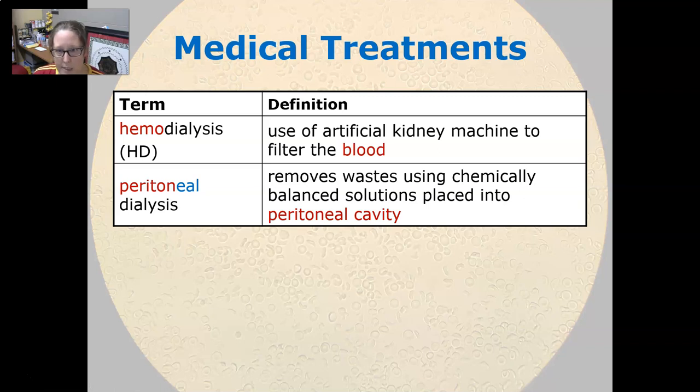Hemodialysis is the use of an artificial kidney machine to filter the blood. The blood is actually routed outside of the body through the machine and back into the body.